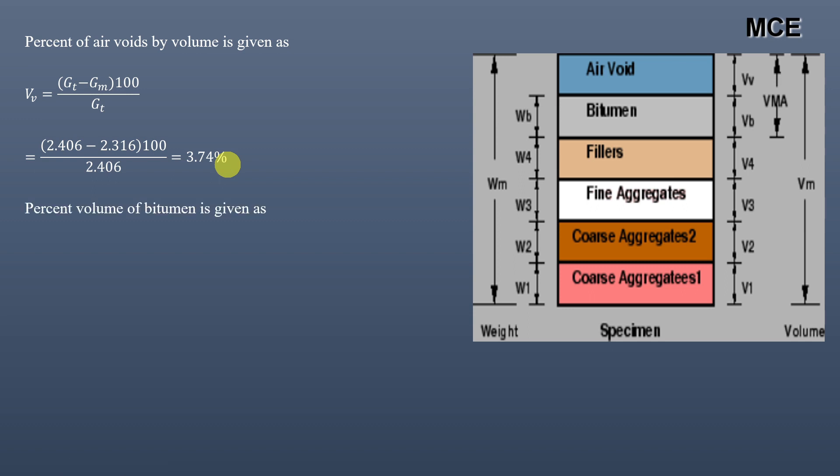After that, we will find the volume of the bitumen, that is percent volume of bitumen in the mix. This is equal to Wb which is the weight of the bitumen divided by the specific gravity of the bitumen Gb, into 100, divided by W1 plus W2 plus W3 plus W4 plus Wb divided by Gm which is the bulk specific gravity.